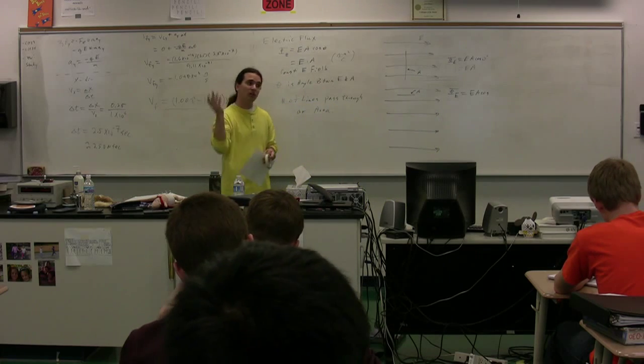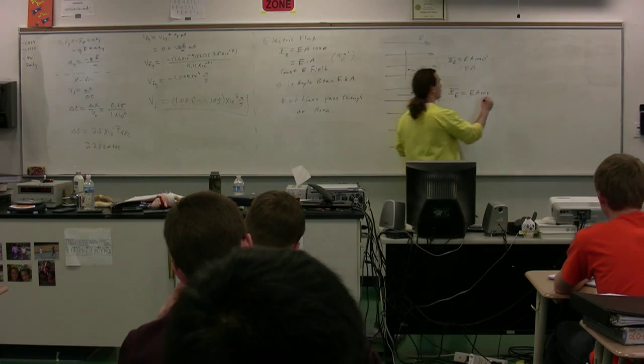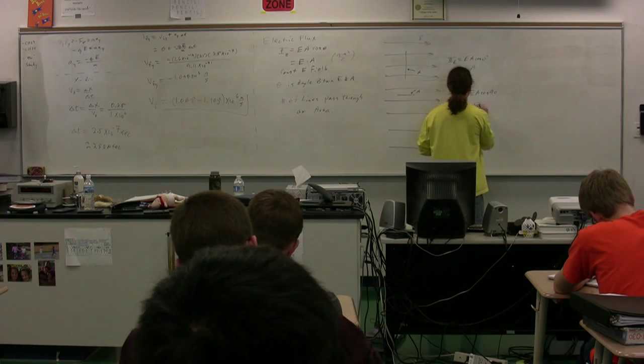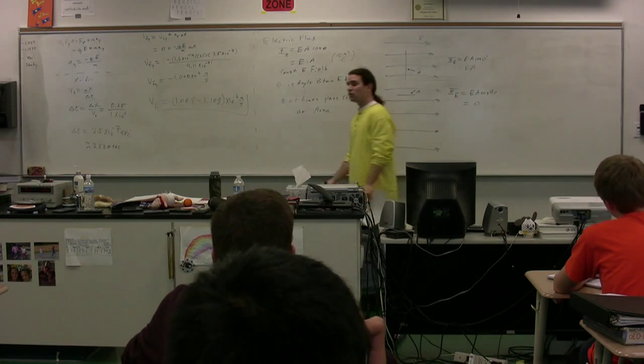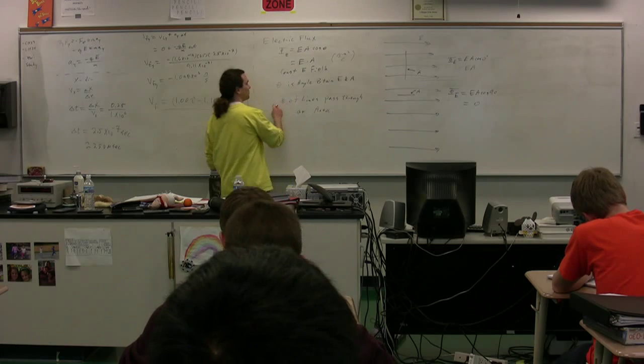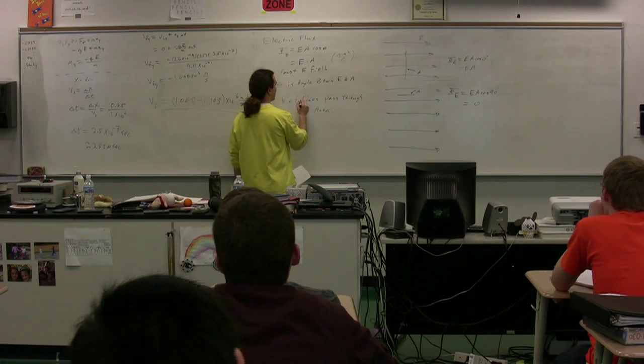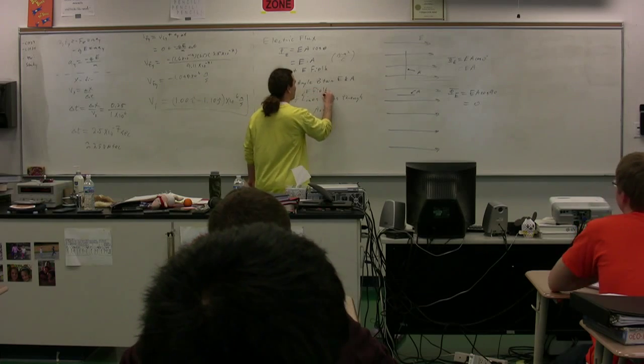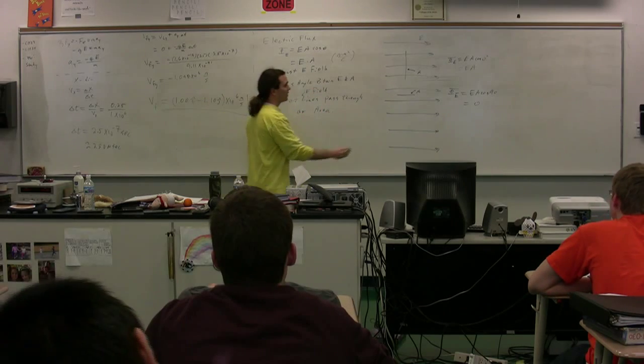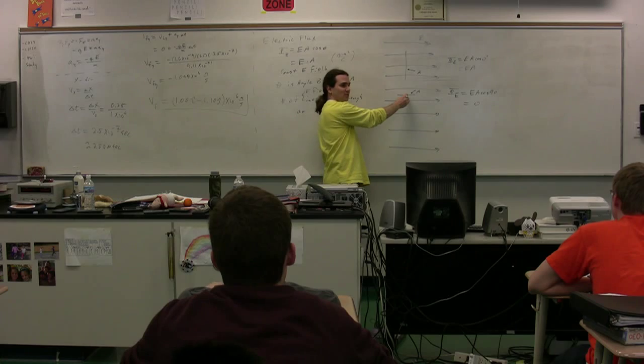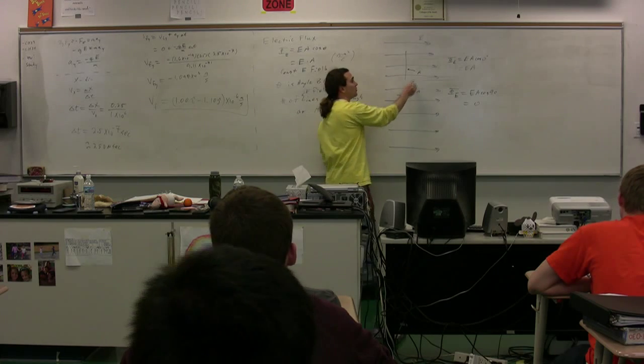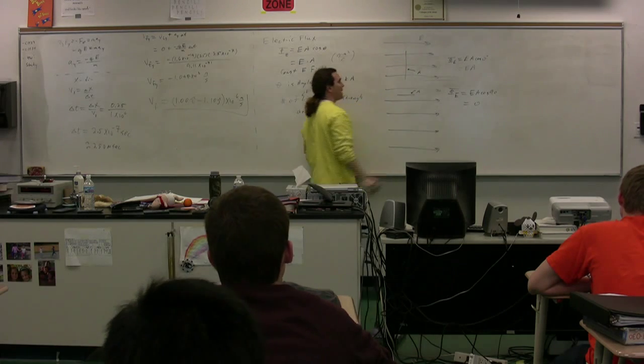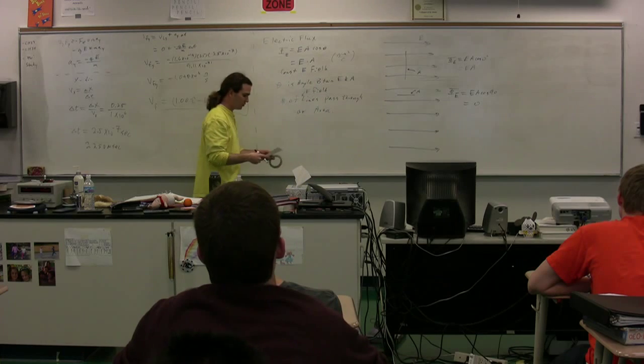270. 270. Doesn't really matter. Either way, the cosine of 90 and the cosine of 270 is equal to zero. So notice, when we talk about it as being the number of electric field lines that pass through that area, there are zero electric field lines that pass through there. So there's zero flux. This is the maximum amount of flux that you could get.